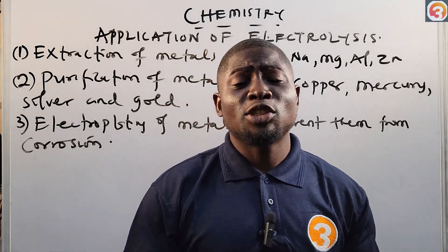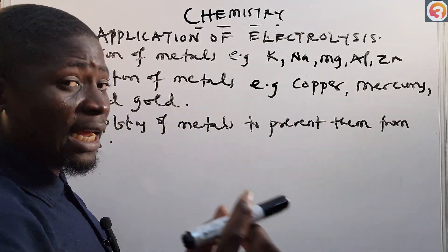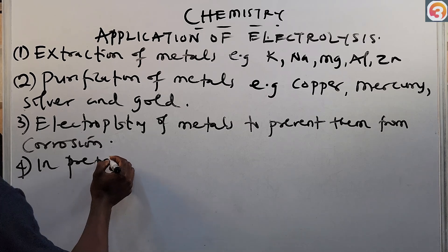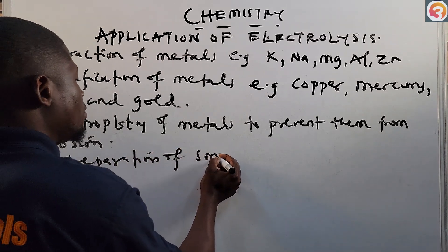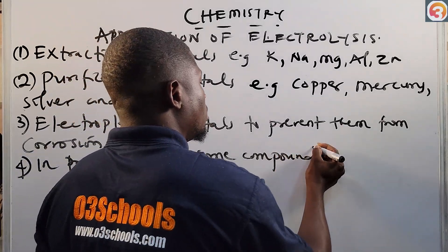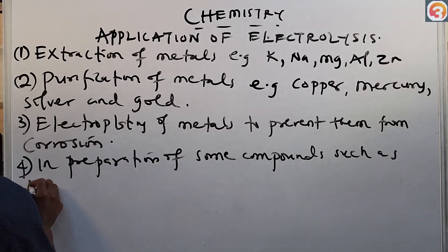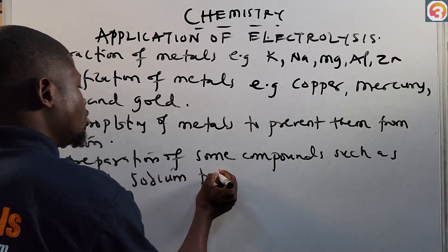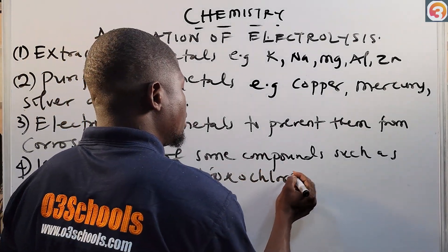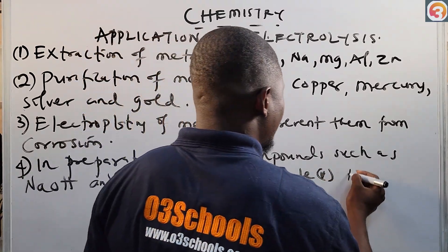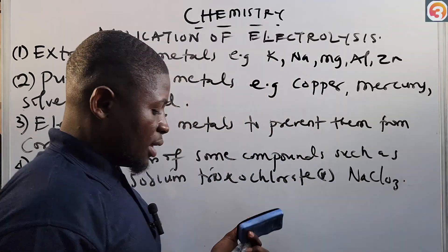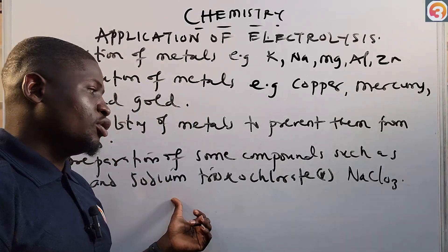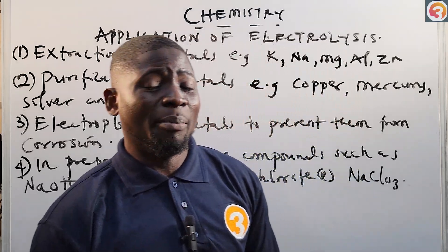Kitchen utensils are also electroplated — since they are always in contact with water, they can easily get rusty. That's why you see silver spoons and golden spoons. The fourth application is the preparation of compounds such as sodium hydroxide (NaOH) and sodium trioxochlorate(V), NaClO₃.